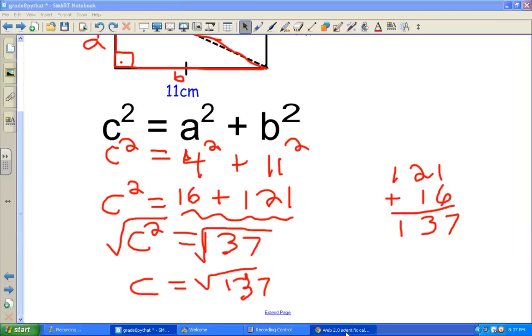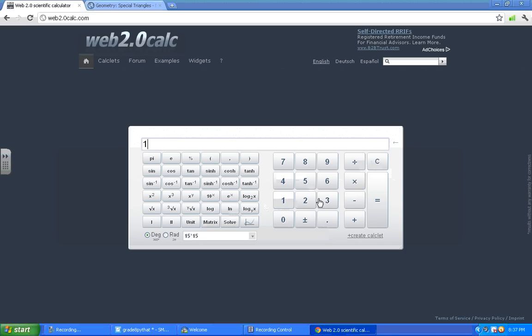Of course, we'd have to use our calculator to figure that one out. So 137. And then we do the square root. And the answer is 11.7.